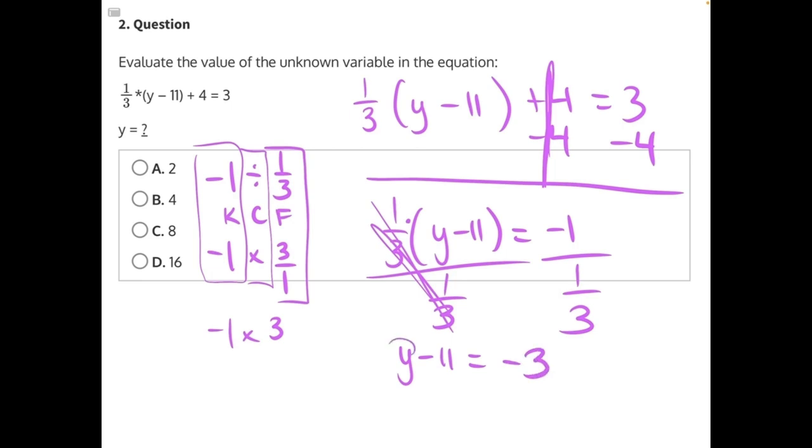Now for the final step to isolate y, we need to do the opposite of subtracting 11. We need to add 11 to both sides. These 11s will cancel, leaving us with y equals negative 3 plus 11.